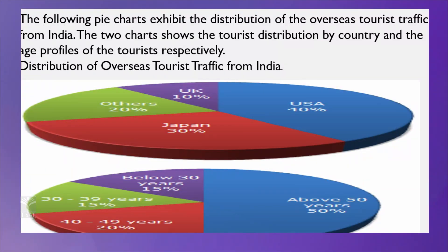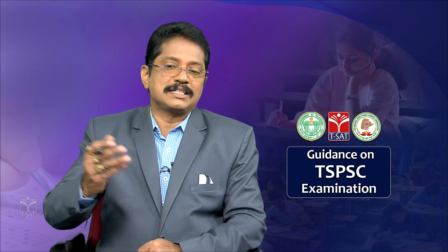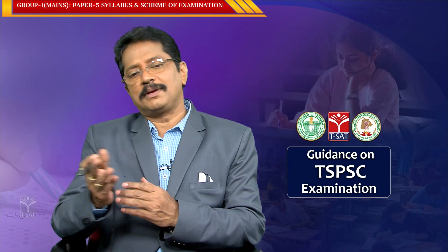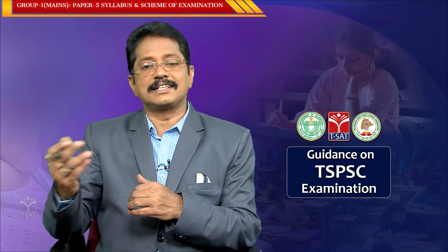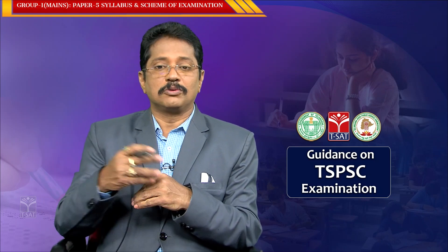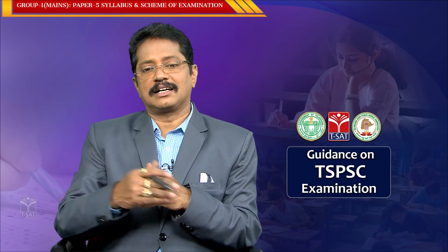The second pie chart shows the age profile of tourists. Below 30 years: 15%; 30 to 39 years: 15%; 40 to 49 years: 20%; and above 50 years: 50%. Interestingly, more than 50% of tourists are above 50 years of age — perhaps because their children are settled in foreign countries and they want to visit them.